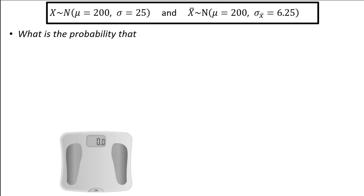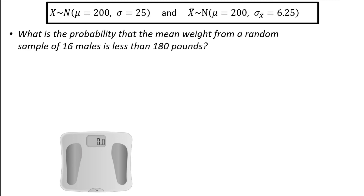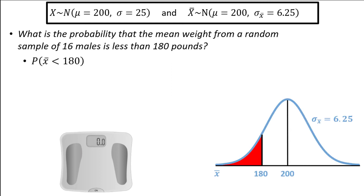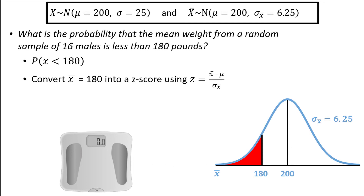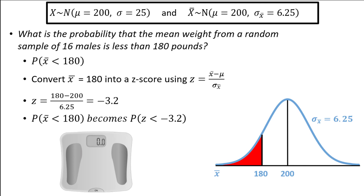What is the probability that the mean weight from a random sample of 16 males is less than 180 pounds? This is the probability that x-bar is less than 180. The graph looks the same as it did in the single observation case, except now the horizontal axis is x-bar instead of x. Do you think this probability is larger or smaller than the probability we found based on a single observation? Let's find out. First, let's convert x-bar equals 180 into a z-score. The z-score calculation is essentially the same as it was in the single observation case, except now we have x-bar instead of x in the numerator, and the denominator has the standard deviation of x-bar, which we know to be 6.25. We have 180 minus 200 divided by 6.25, which is equal to negative 3.2. The probability statement becomes the probability z is less than negative 3.2.